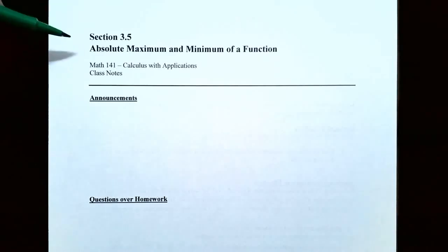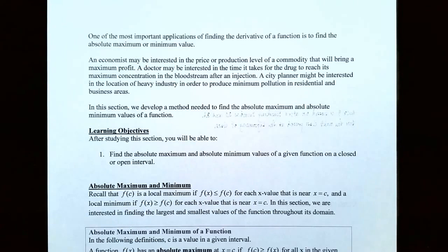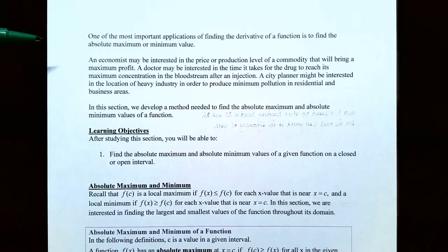Hi everyone, it's Professor Permanent and in this video we're going to talk about how to find the absolute maximum and minimum of a function. One of the most important applications of finding the derivative is to find the absolute maximum and absolute minimum value. For example, an economist may be interested in finding the price or production level of a commodity that will bring a maximum profit.